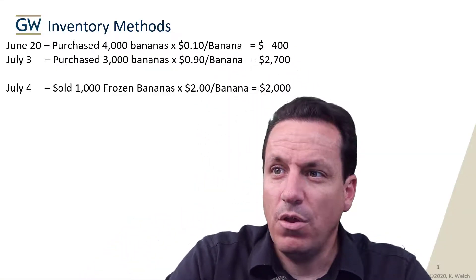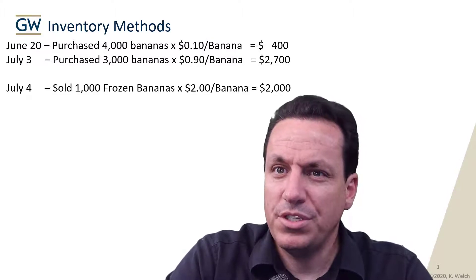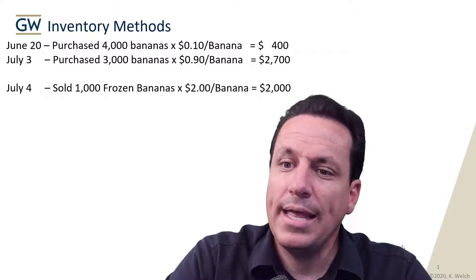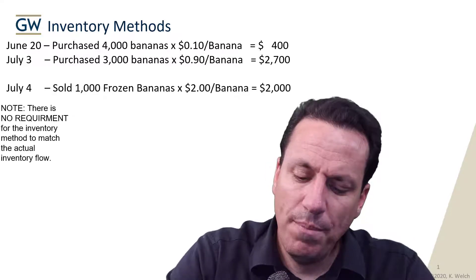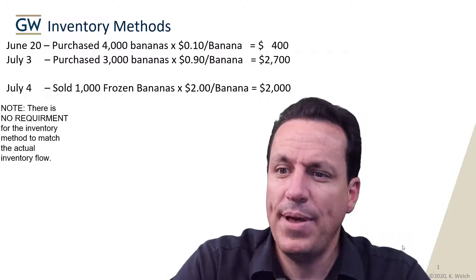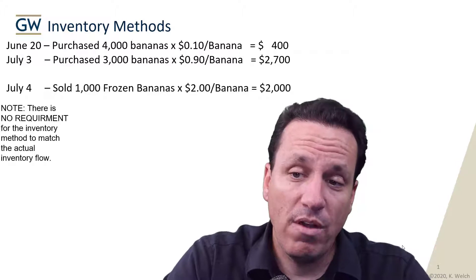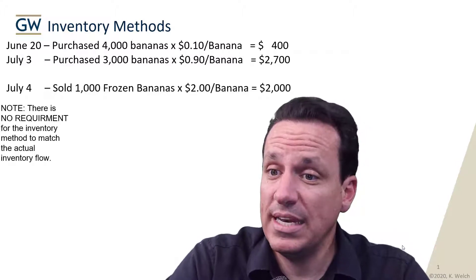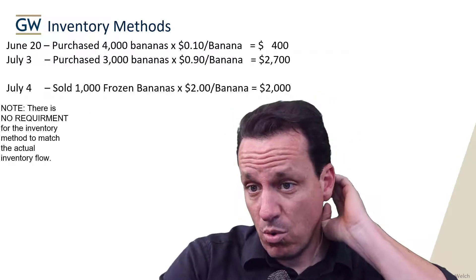In this video, we're going to be talking about the advantages and disadvantages between the different assumptions of LIFO and FIFO. In our example from our prior video with the Bluth banana stand, we went through a series of purchases in June and July and then a sale on July 4th of some bananas. Remember, these assumptions we're talking about are for accounting purposes — they do not have to match the actual physical flow. However, for our example, we'll assume the physical flow matches, but it's not a requirement.